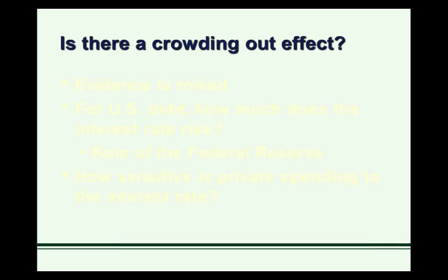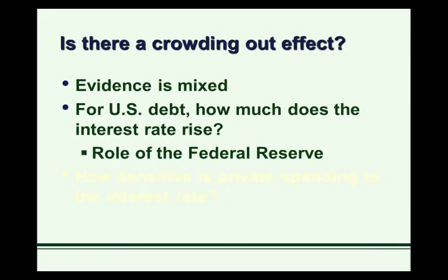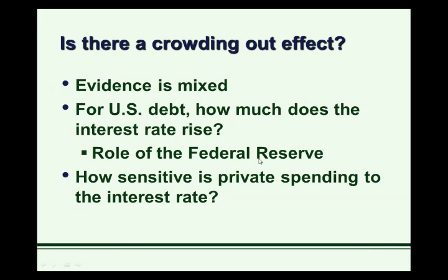Is there actually a crowding out effect? Actual evidence in the U.S. economy with U.S. federal government borrowing is kind of mixed. For U.S. debt, how much does the interest rate rise due to the borrowing? Well, here we have a central bank — the Federal Reserve — playing a role. The Federal Reserve buys a lot of the treasury debt issued for their own portfolio, so that limits the rise in interest rates that would lead to crowding out. The other issue is how sensitive is private spending to the interest rate. The interest rate, the cost of financing, is only a small part of the decision of businesses to expand and borrow. These two things really determine the extent of the crowding out effect, and empirical evidence hasn't found a strong crowding out effect with respect to U.S. federal debt.